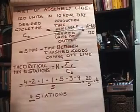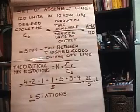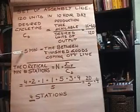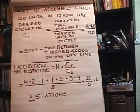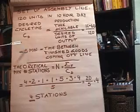Five minutes is your desired cycle time. Another way to think about that is that's the time between the finished goods coming out the line. So every five minutes during the 10-hour day you have to have this good coming out the line.